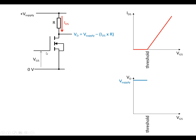As soon as we go above the threshold, remember the current against gate-source voltage graph — the current is going to increase, which means the voltage drop across the resistor is going to increase, which means VD is going to start to fall. So as soon as we go above the threshold, the voltage at the drain starts to fall as VGS goes higher.